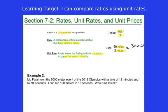Well, to do this, to make the denominator be one, I just need to divide top and bottom by three and I get 30 miles in one hour.